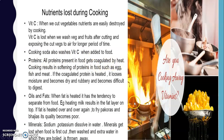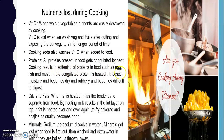Proteins in food get affected by heat. Cooking results in softening the proteins in foods such as egg, fish, and meat. If the coagulated protein is heated further — for example when we boil eggs — the egg white gets softened, loses moisture, becomes dry and rubbery, and becomes difficult to digest. Overcooking proteins makes them hard to digest.